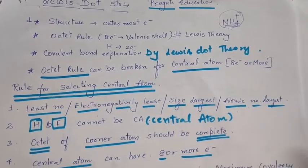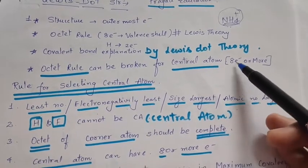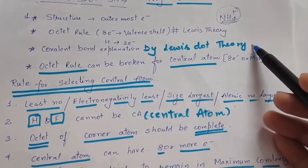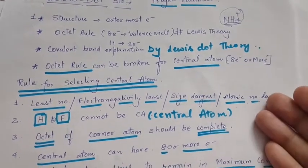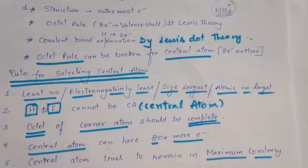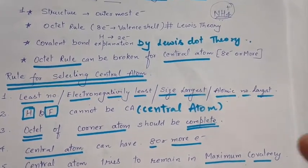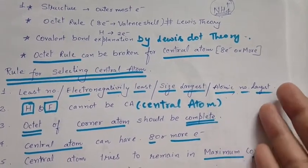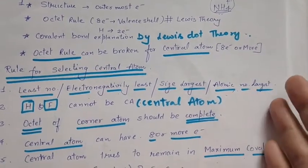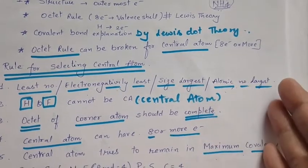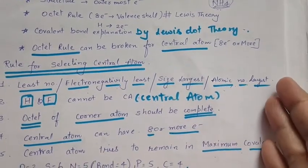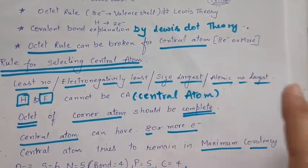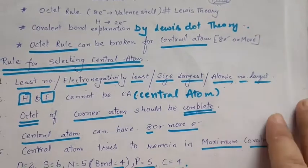Lewis theory explains covalent bond formation. If you are confused while writing the structure — what should be the central atom and what should be the corner atom — here are some rules. Rule number one for deciding the central atom: it should be present in the least number, or its electronegativity should be the least, or its size can be the largest, or its atomic number is the largest. Also, hydrogen and fluorine can never be the central atom; they are always corner atoms.